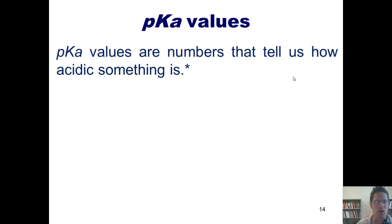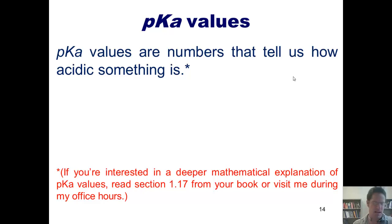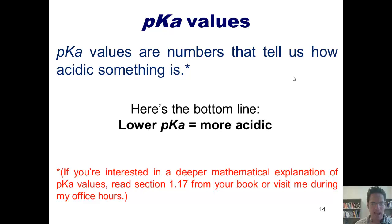Simply put, pKa values are numbers that tell us how acidic something is. Now if you're one of those deep-thinking math-type people who's interested in a more profound mathematical explanation of what pKa values are, then I invite you to read section 1.17 from our textbook, or visit me during my office hours. Here's the bottom line that I want you to know. The lower the pKa, the more acidic the proton in question. As pKa goes down, acidity goes up.